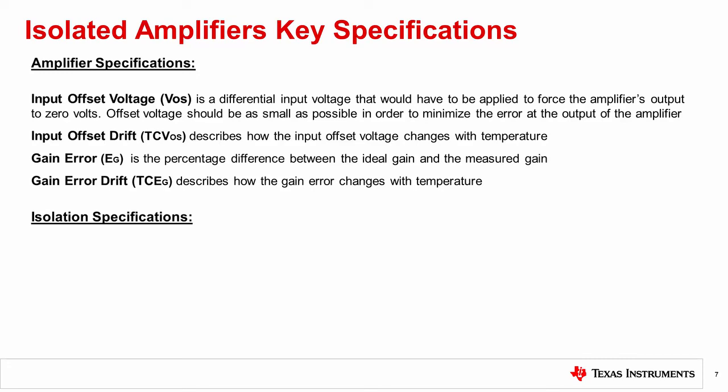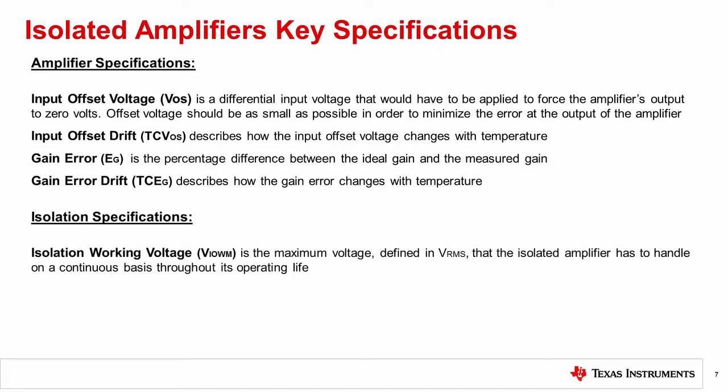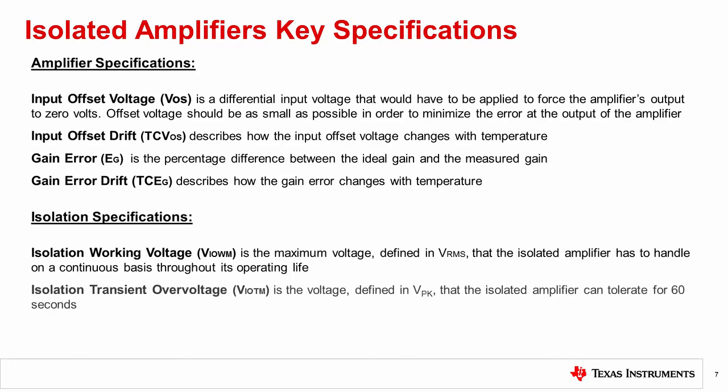Now we will go over some common isolation specifications. First, we will consider isolation working voltage, which is the maximum voltage defined in volts RMS that the isolated amplifier has to handle on a continuous basis throughout its operating life. Next, isolation transient over voltage is the voltage defined in volts peak that the isolated amplifier can tolerate for 60 seconds.